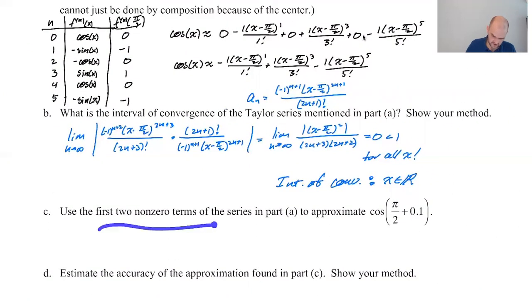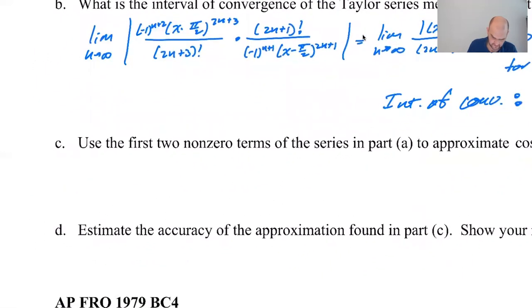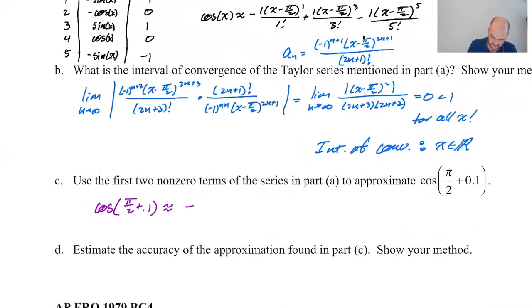So the next question is the first two non-zero terms to approximate cosine of π/2 plus 0.1. So this seems like, Oh my God, this is going to be annoying. It's less annoying than you think because when you plug in π/2 plus 0.1, the π/2 and the minus π/2 cancel every time. So the cosine of π/2 plus 0.1 is going to be approximately negative 0.1 over one factorial, and then plus 0.1 cubed over three factorial. Two non-zero terms.